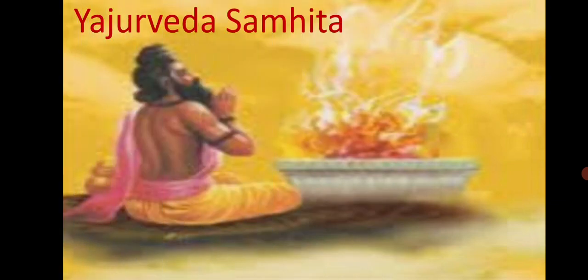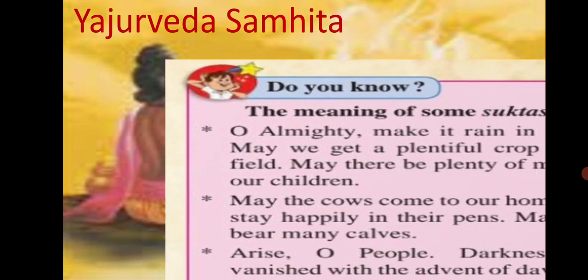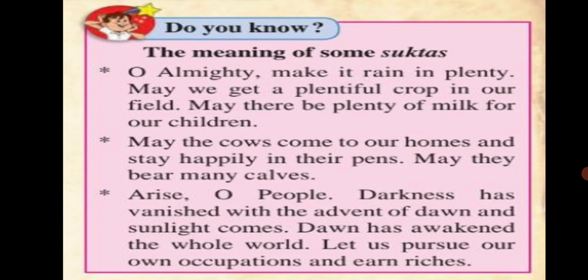The Yajur Veda contains mantras uttered during a Yajna. It provides guidance about how and when the different mantras must be chanted during Yajna rites. This text includes verses or poetic incantations and explanations in prose. You must have seen a priest conducting a Yajna, offering rituals using fire. Suktas means Vedic verses which include hymns and songs.